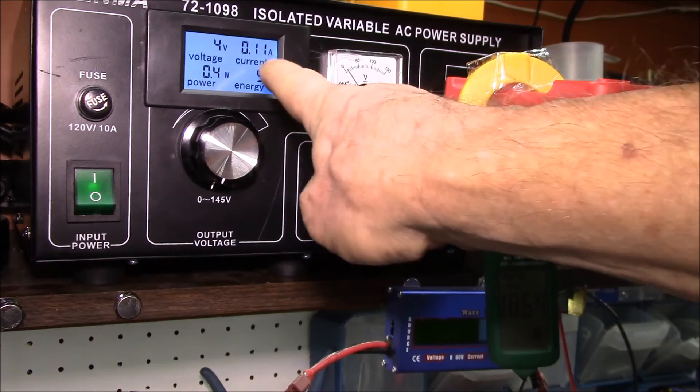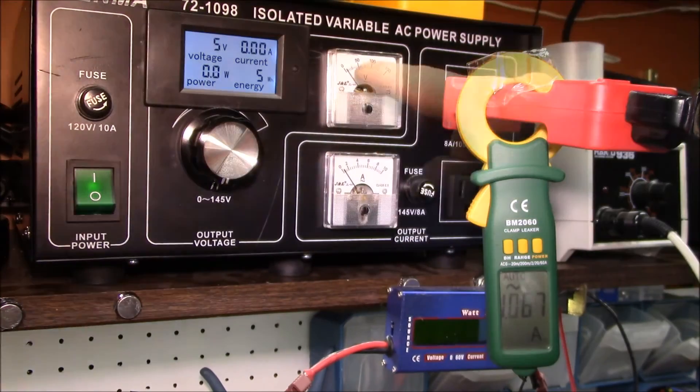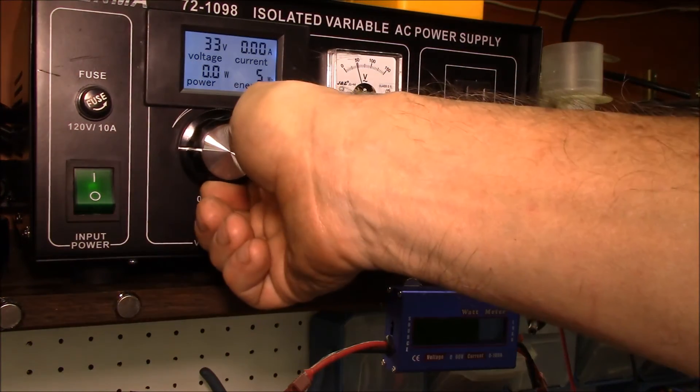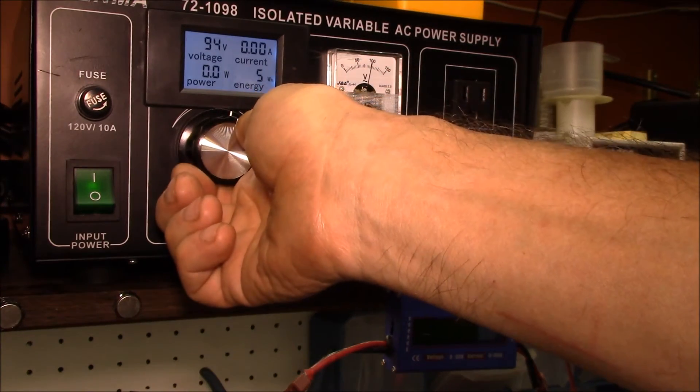You can see the volt meter - there's 50 volts on that meter, there's 100 volts. I can go up a little bit - there's 100 on the meter.